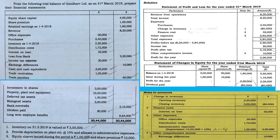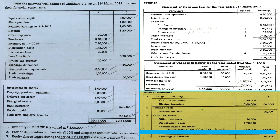Finally, take the totals of all the columns. You will get: equity capital 4 lakhs, share premium 1 lakh, retained earnings 3,60,000, and total 8,60,000. This is how you prepare the statement of changes in equity.